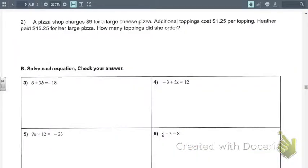Number 2 says a pizza shop charges $9 for a large cheese pizza. Additional toppings cost $1.25 each, $1.25 per topping. Heather paid $15.25 for her large pizza. How many toppings did she order? We've got to define our variables first.